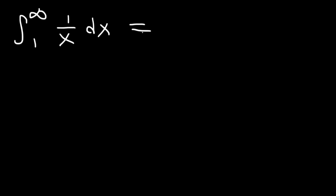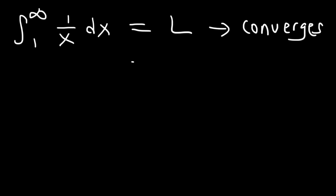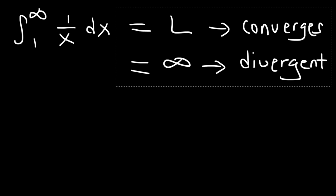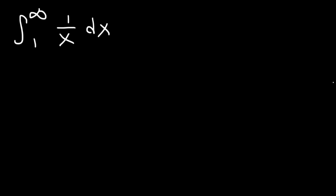Well, if we get a finite number L — if the limit exists — that would mean the integral converges to a value. However, if we don't get a finite number, say we get infinity, then we can say the integral is divergent. This is called an improper integral when you see infinity in either the lower or upper limit of the integral sign.